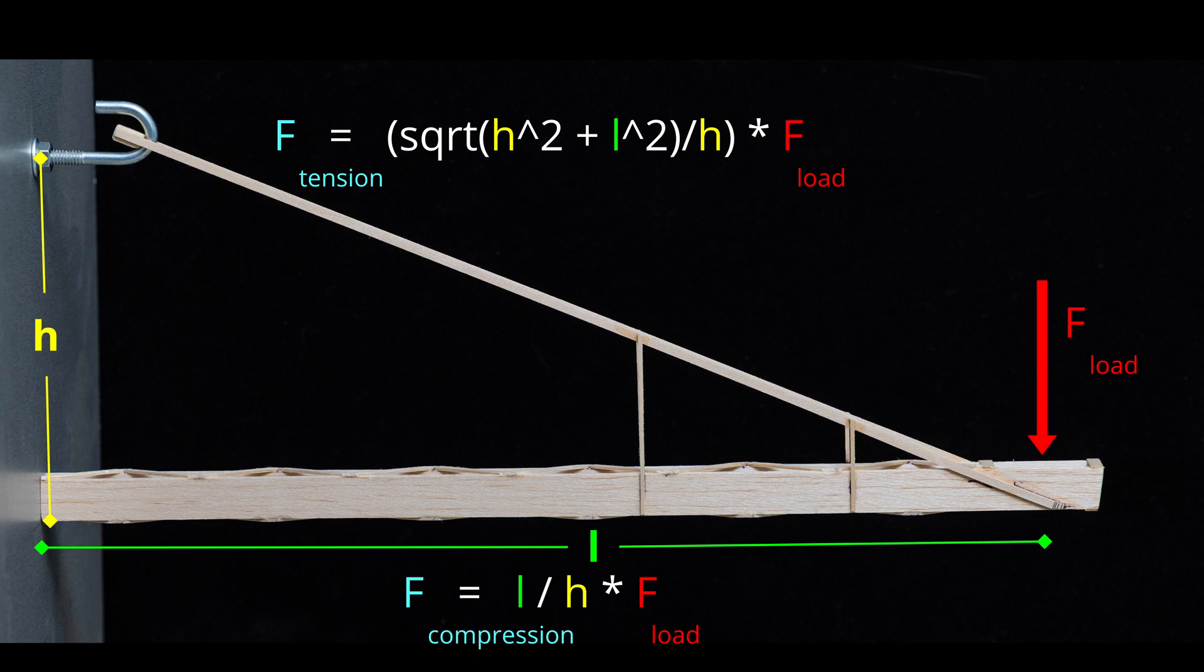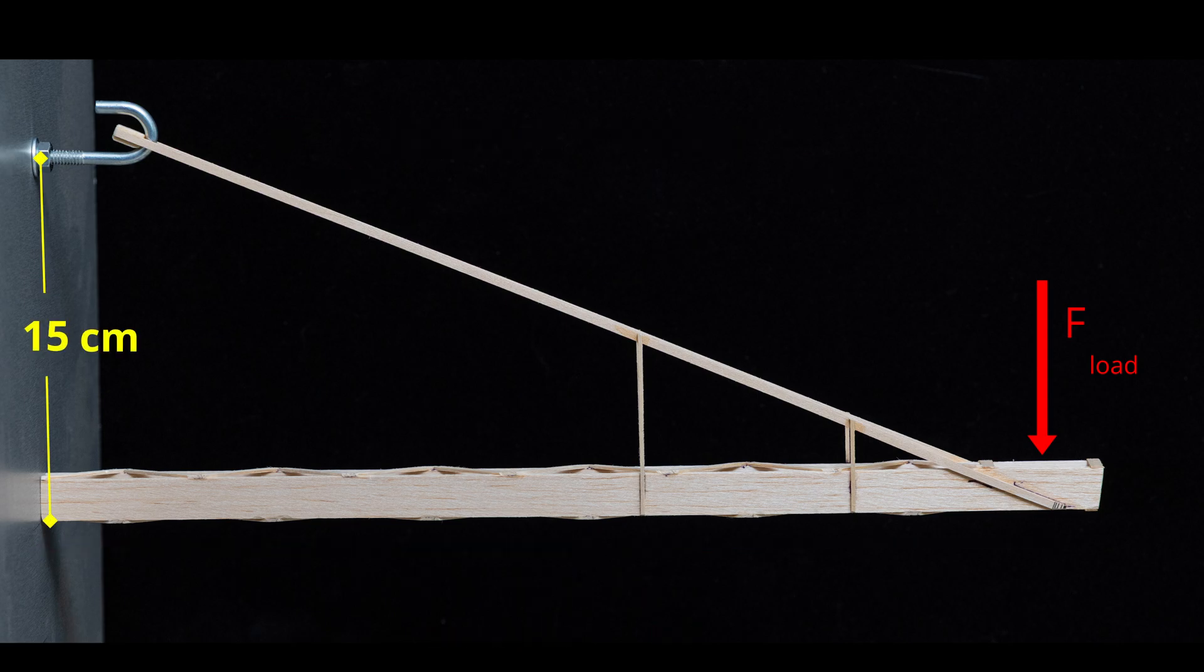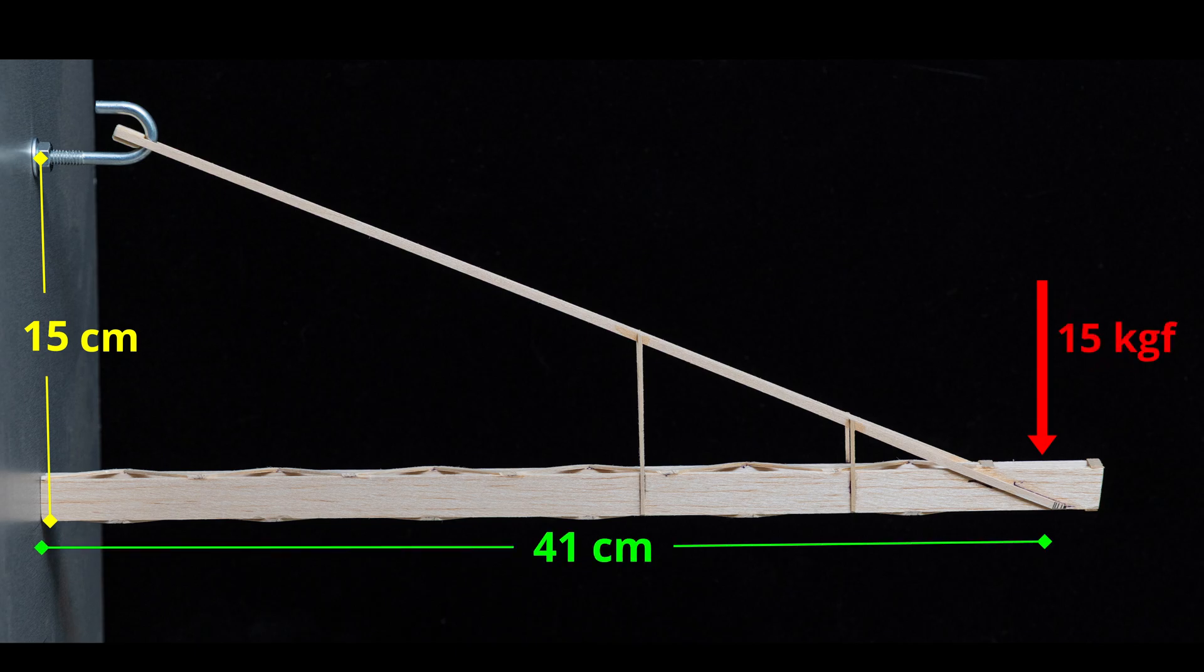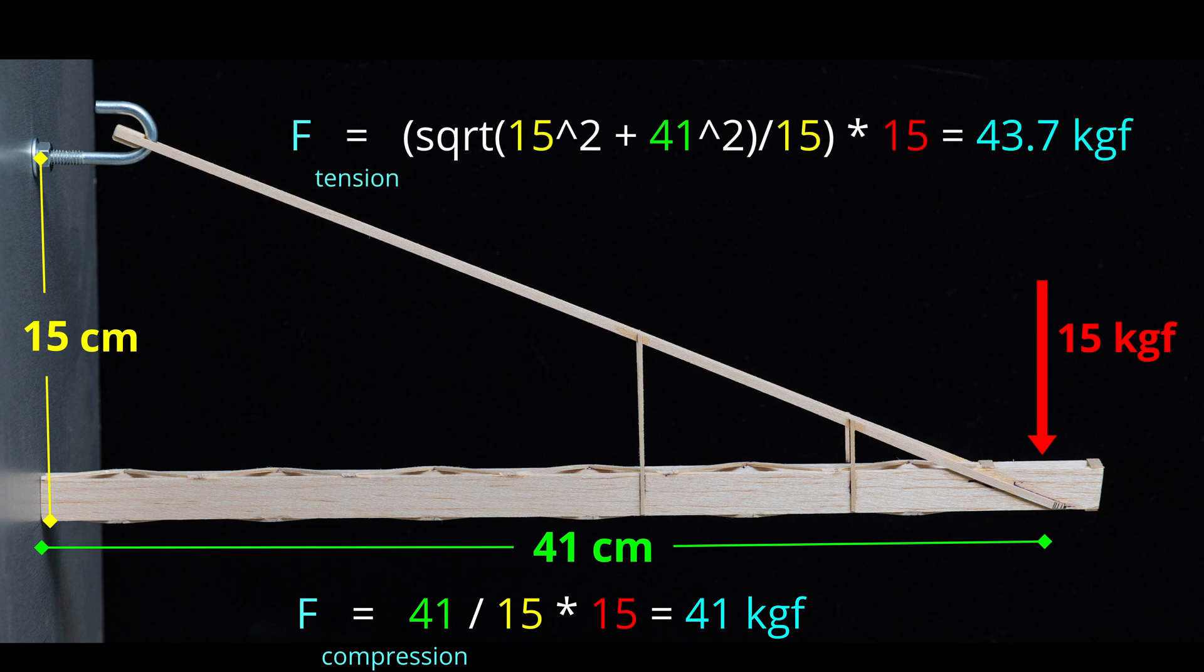Okay, but what does that mean for a typical example? For this particular Division C build, h is 15 centimeters and l is 41 centimeters. If we want the boomie to be able to hold the entire 15 kilograms, if we plug the numbers into the equations, the compression force is 41 kilograms, and the tension force is a whopping 43.7 kilograms, or just over 96 pounds of force that our tension members need to withstand.